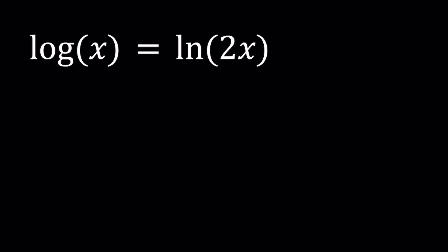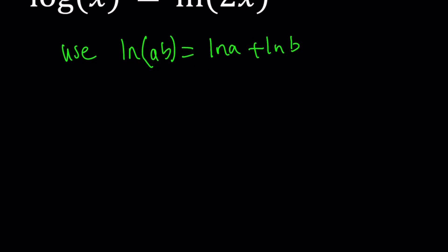Let's go ahead and use the formula. Let's just use ln ab equals ln a plus ln b on the right hand side. So ln 2x can be written as ln 2 plus ln x.